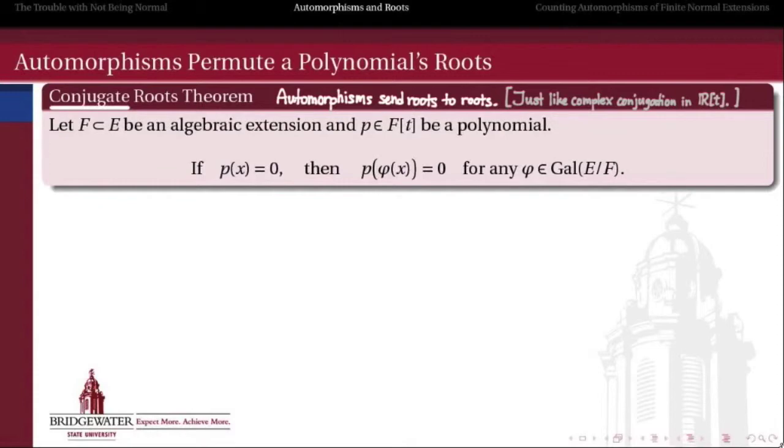So the statement is, if E is an algebraic extension of F, and p is a polynomial over F, then if x is any root of p, then phi of x will also be a root of p for any phi which is an automorphism of E over F. In other words, any phi which is an element of the Galois group of E over F.